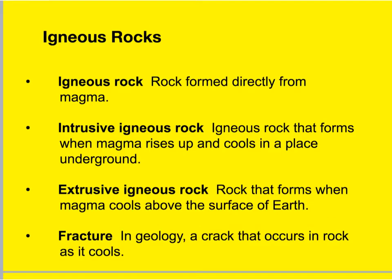Igneous rocks are formed directly from magma and are classified by their chemical composition — they're either basaltic or granitic — and by their mode of formation — either intrusive or extrusive. Basaltic rocks are dark-colored rocks containing minerals with a high concentration of iron, magnesium, and calcium, and they are the dominant type of rock on Earth's crust and on oceanic plates. Granitic rock is a lighter-colored rock made up of minerals like feldspar, mica, and quartz, containing elements like silicon, aluminum, potassium, and calcium. It's the dominant rock type in the crust of continental plates.